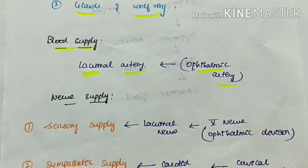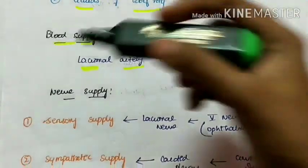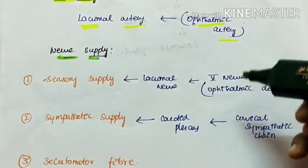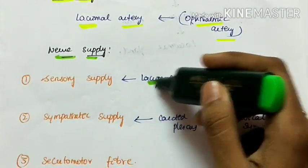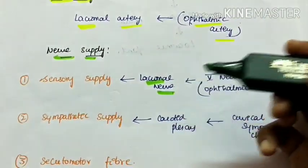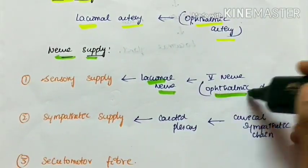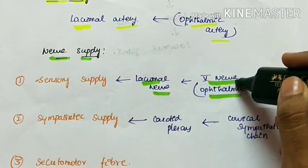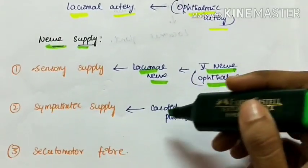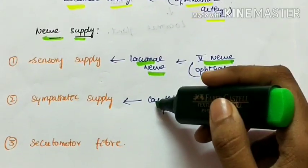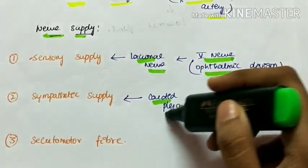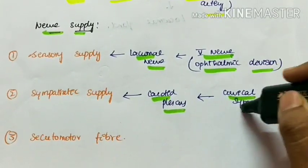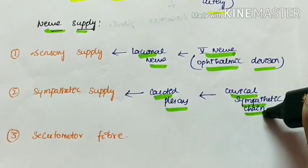The sensory supply of the lacrimal gland is by the lacrimal nerve, which is a branch of the ophthalmic division of the trigeminal nerve. The sympathetic supply is through the carotid plexus, which comes from the cervical sympathetic chain.